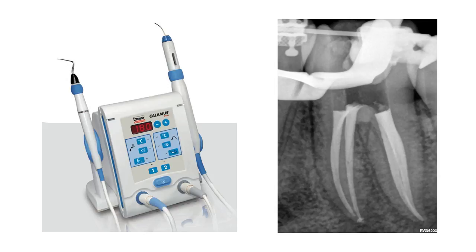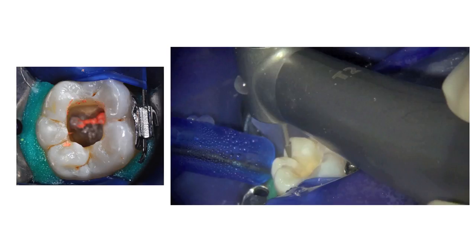This periapical radiograph illustrates the immediate postoperative result of the obturation of the root canals. Here you can see the occlusal view of the tooth showing the access cavity after obturation of the root canal system.